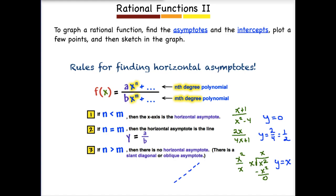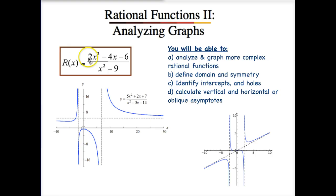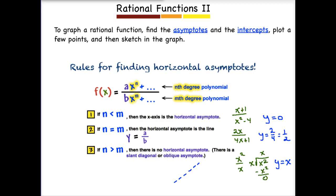Let's start off with looking at rules for finding horizontal asymptotes. Our functions no longer have a constant in the numerator — we now have an X in the numerator. Anytime you have an X in both the numerator and the denominator, we have a more complex rational function, and these three rules will apply for finding our horizontal asymptote. We will no longer just use the number to the right of the rational function as a horizontal asymptote.